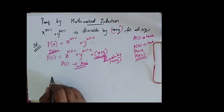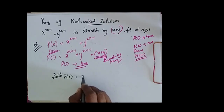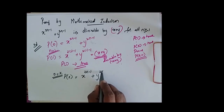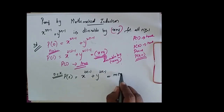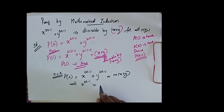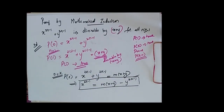Now since it is true for n equal to 1, I say that it is true for n equal to k. So my P of k is equal to x power 2k minus 1 plus y power 2k minus 1, which is equal to some multiple of x plus y. Now I can rewrite this as x power 2k minus 1 is equal to m into x plus y minus y power 2k minus 1. Have this in mind — we have to use this for further proof. So now we say that my P of k is true.